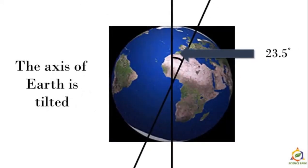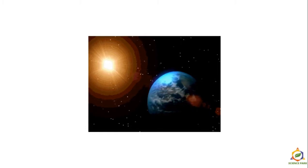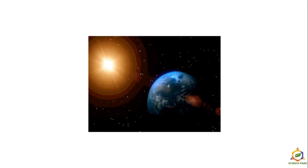As we know, the axis of rotation of earth is tilted by 23.5 degrees with respect to the position of the sun. Now let's see some effects due to the earth's rotation. Earth rotates in an anti-clockwise direction.